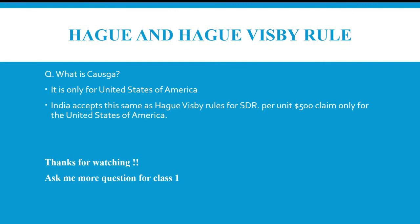When asked about COGSA, it applies only to the United States of America. India accepts the same rules as the Hague-Visby Rules for SDR. Under COGSA, the claim is $500 per unit, applicable only to the United States of America.